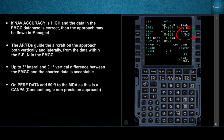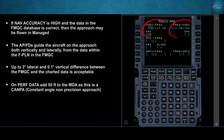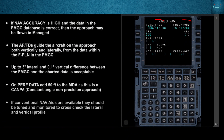Up to 3 degrees lateral and 0.1 degrees vertical difference between the FMGC and the charted data is acceptable. On performance data, add 50 feet to the MDA as this is a CDFA approach. If conventional nav aids are available, they should be tuned and monitored to cross-check the lateral and vertical profile.